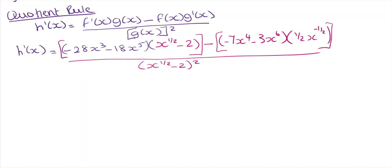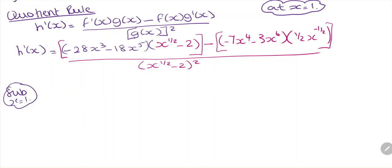The question is asking us to find the equation of a tangent line at x equals 1. So we substitute x = 1 into h'(x). -28 times 1 cubed is -28, and 1 to the power of 5 is 1 so that's -18. This is multiplied by 1 to the half, which is just 1, so that's 1 minus 2.